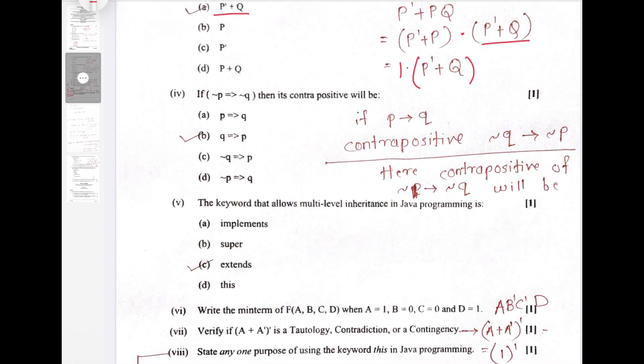Question 4. Contrapositive of the given expression. Now we know if P then Q, then contrapositive will be negation Q then negation P. But for the given expression negation P then negation Q, we have to first inverse it and then find the contrapositive. So option B is correct.